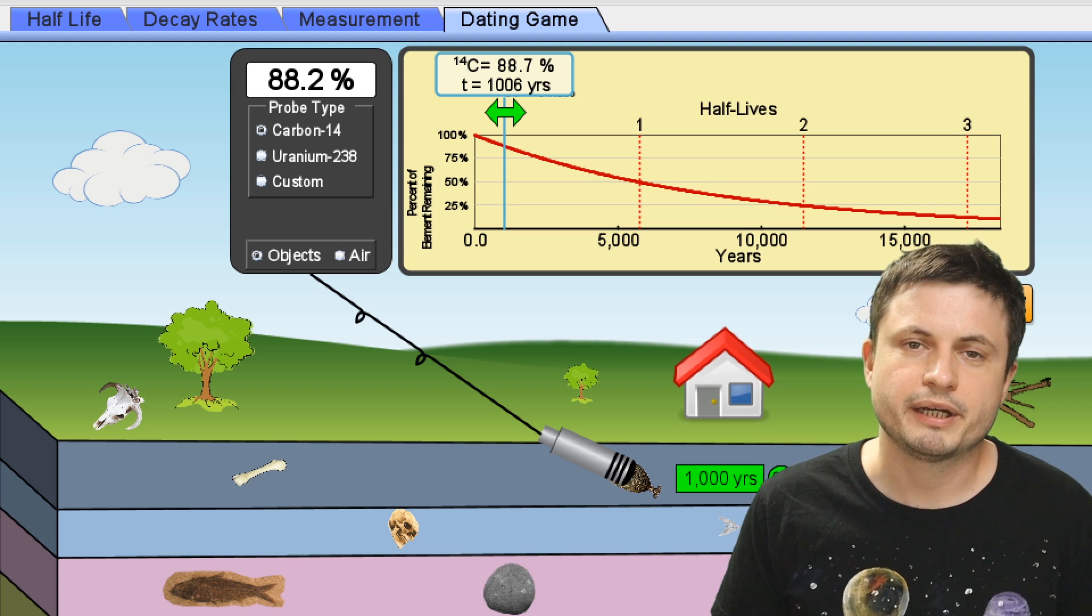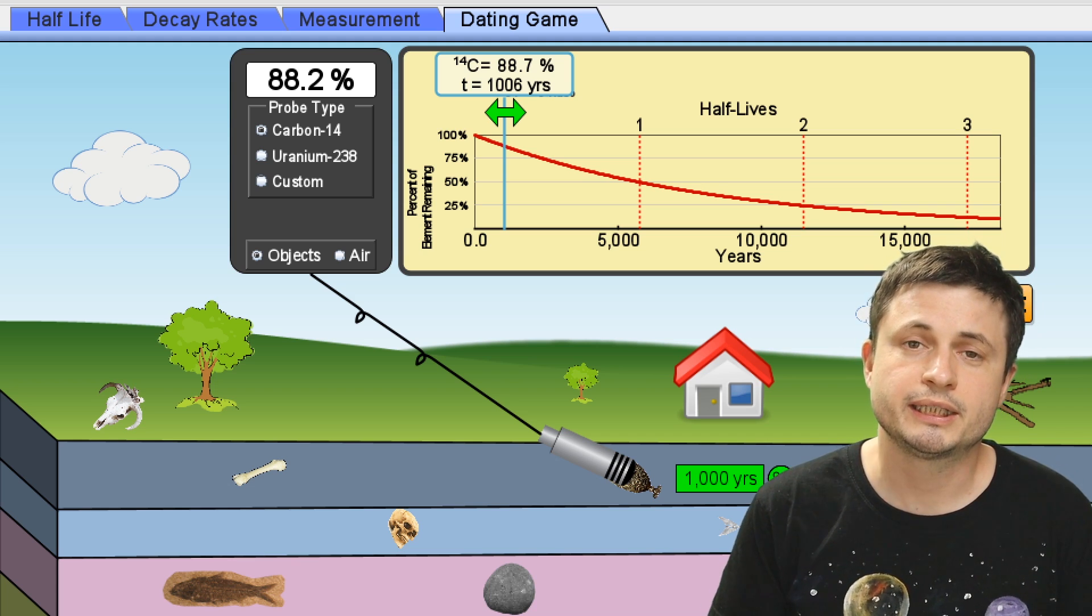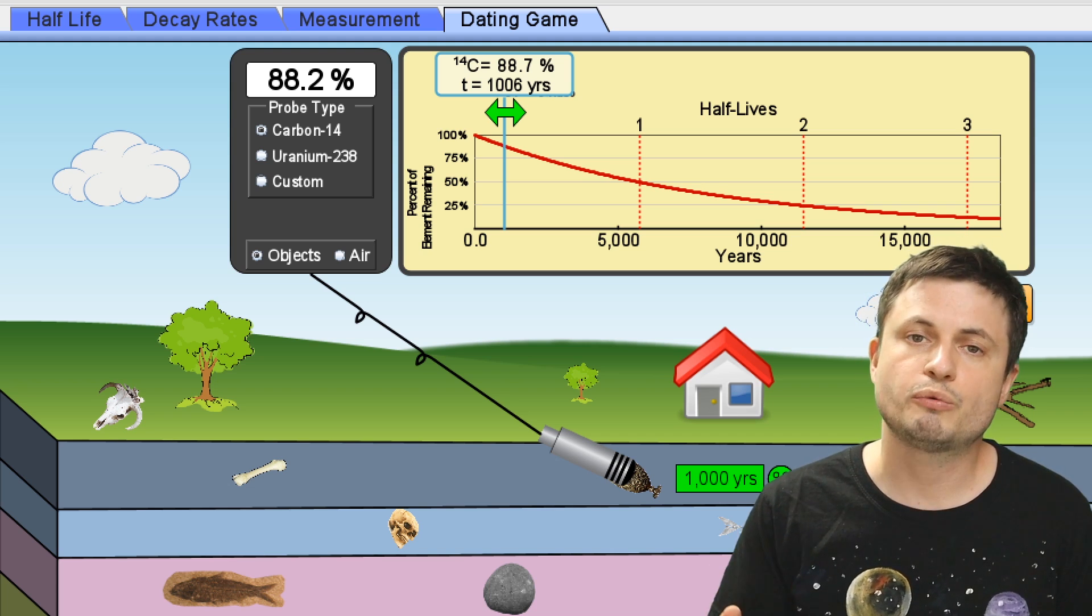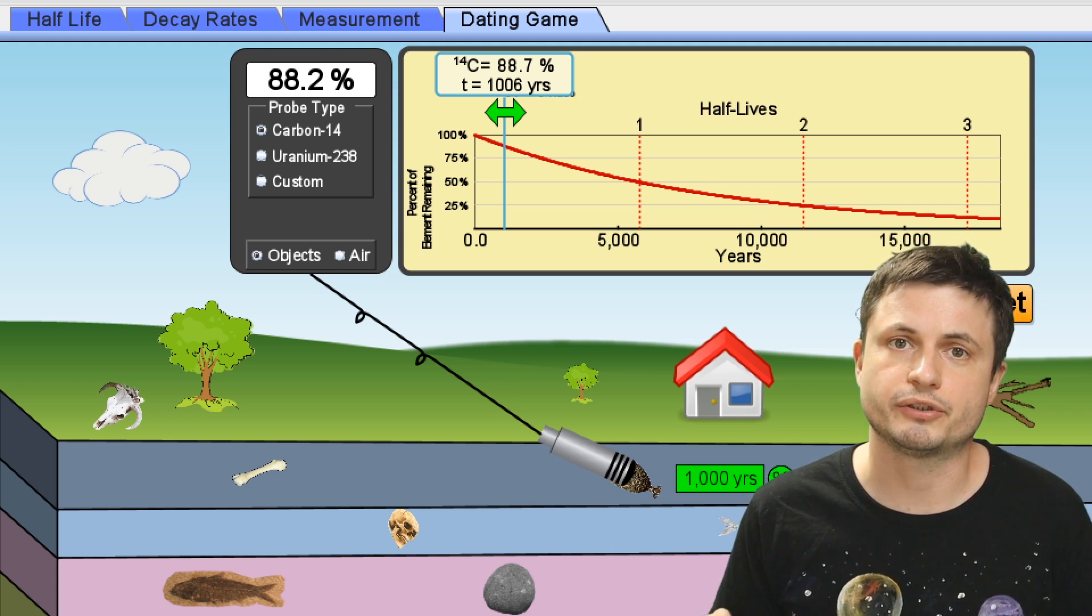This was created by the team from Colorado University a few years ago and it's actually a really good way of learning about carbon dating and about how we usually determine the age of various objects. But all of this is based on the assumption that the radiation or the cosmic rays coming from all over the place are more or less constant throughout the period of 100,000 years.